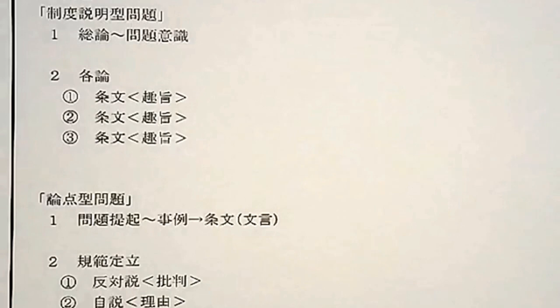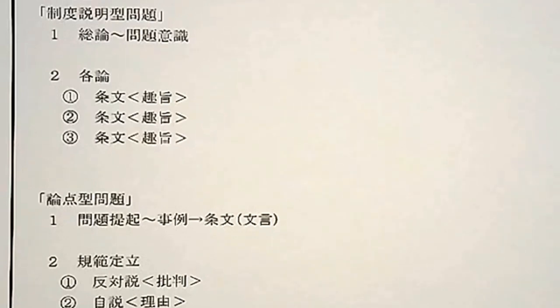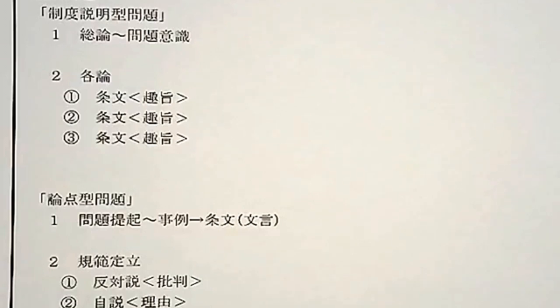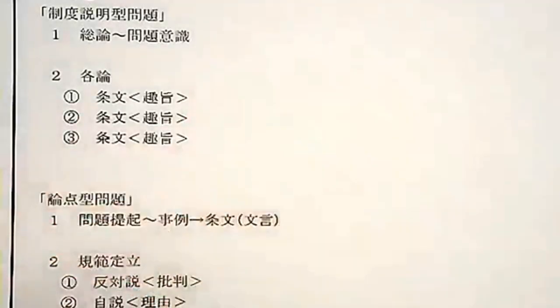制度説明型問題は条文を要約してその趣旨（存在理由・必要性）を書く問題です。条文の知識を示してから、なぜその条文が必要かという趣旨を書きます。問題文から3つから5つの条文を選び出して書くという形が多いです。